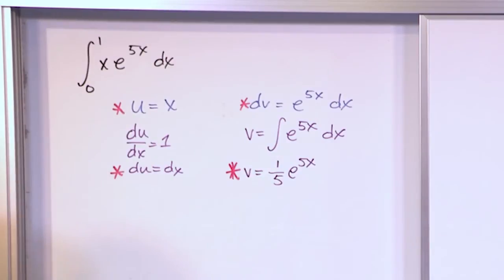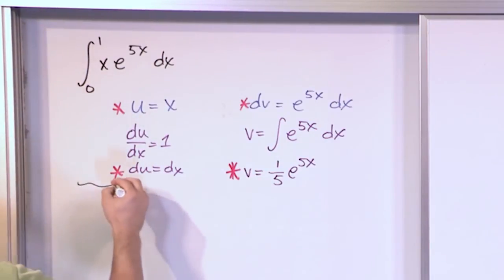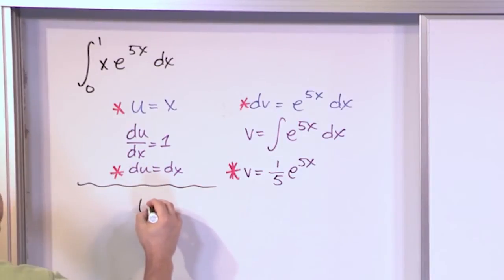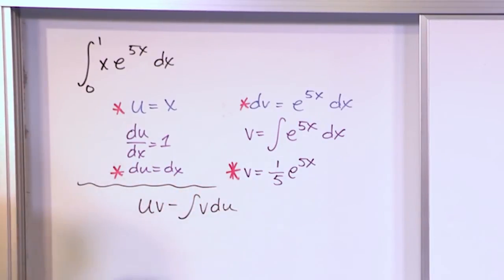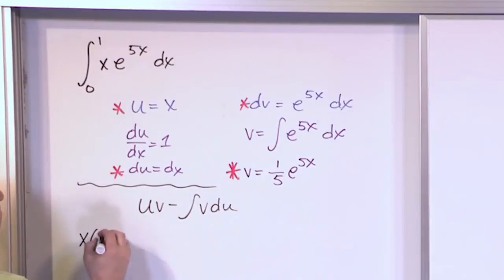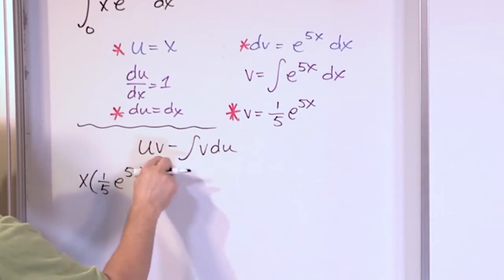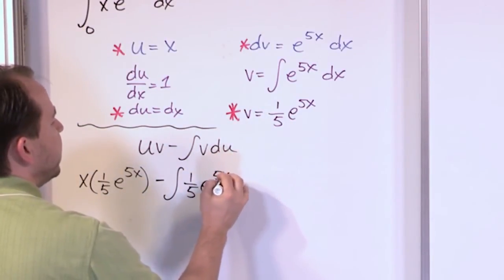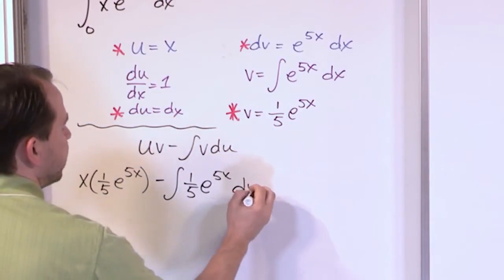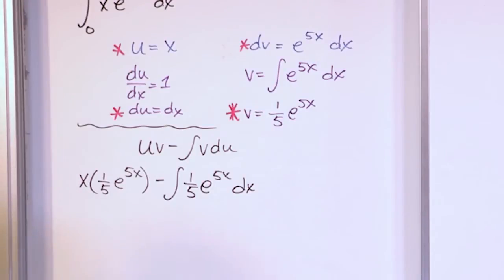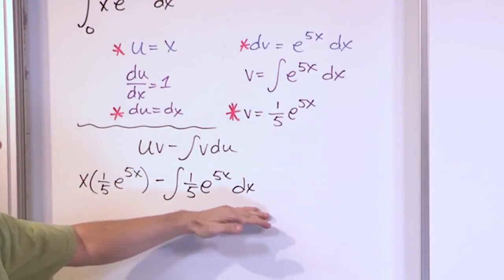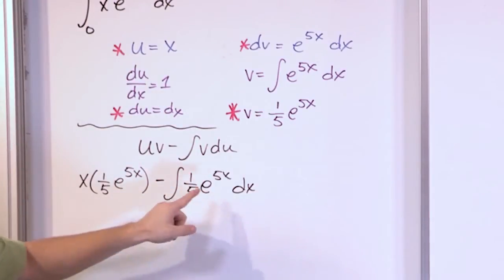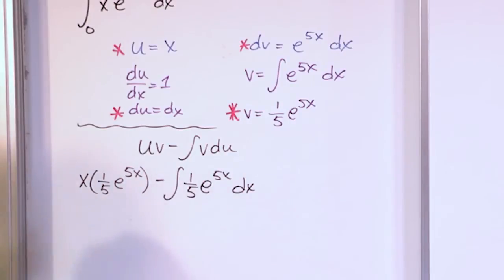Now we have all four pieces needed for integration by parts. The formula is uv minus the integral of v du. So we have x · (1/5)e^(5x) minus the integral of (1/5)e^(5x) dx. We should always end up with a simpler integral than what we started with. Notice the 1/5 can come out, and I know how to integrate the remainder. The first part just comes out from integration by parts.